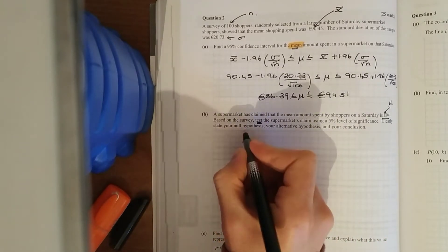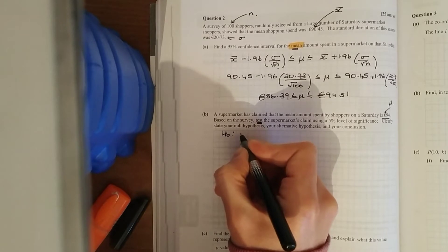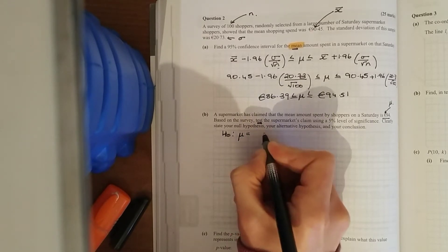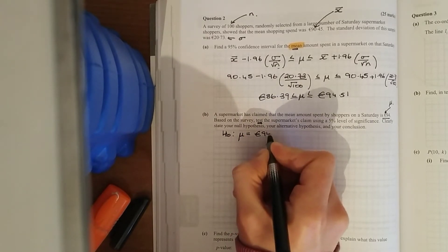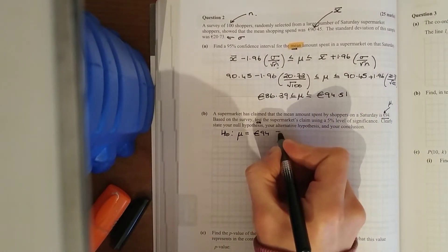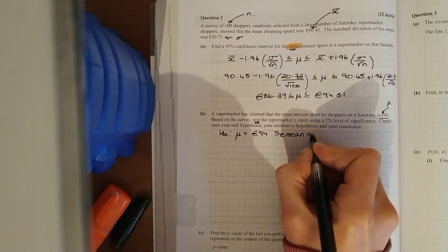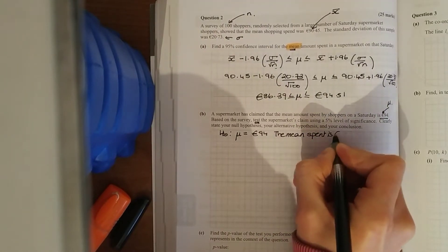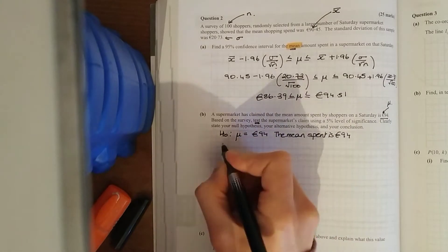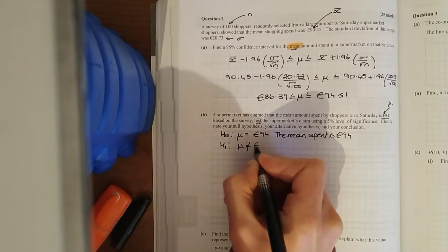Now there's two different ways you can do this. But to state your null hypothesis statement of no change, H0, the mean amount is 94 euro. Statement of no change, whatever they state. If you like, you can put that in English, the mean is 94 euro, the mean amount spent. So whenever the U equals your alternative to that, H1, U is not equal to 94 euro.